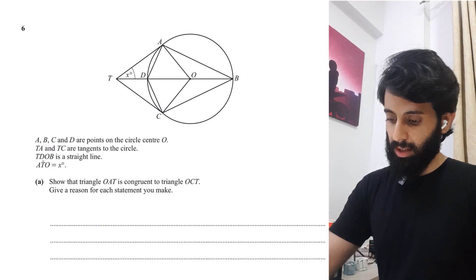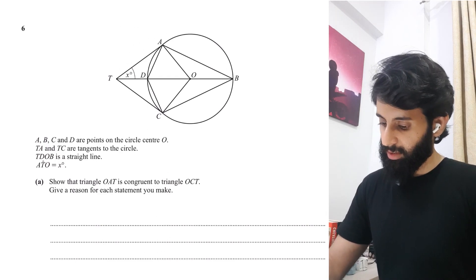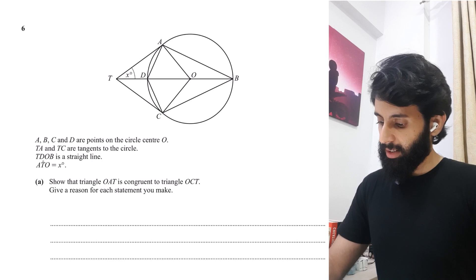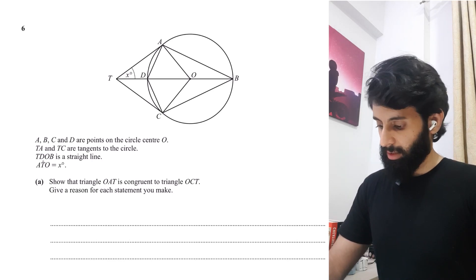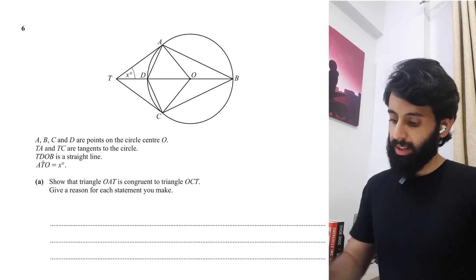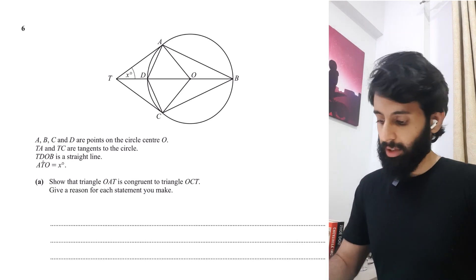It says here A, B, C are points on the circle center O. TA and TC are tangents to the circle. T, O, B is a straight line. Angle ATO is equals to X. Show that triangle OAT is congruent to triangle OCT.